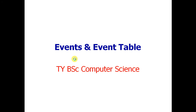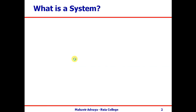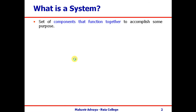Before we go to events, we'll just have a glimpse on what a system is. In general terms, a system is a set of components that function together to accomplish some task. Take any system — the government system, for example — where different departments and ministries all work together to run the government. We can see various systems in our day-to-day life.